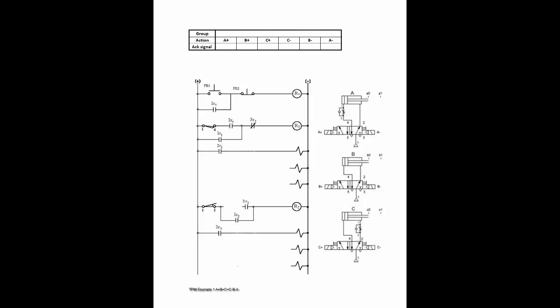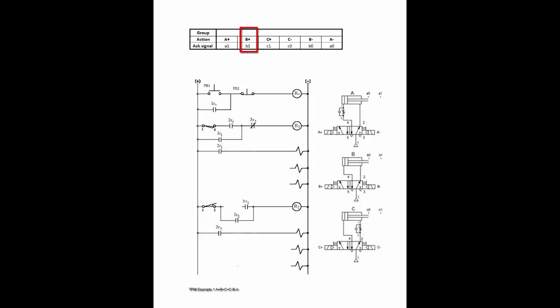With the initial positions of the three cylinders shown on the template, next enter the corresponding acknowledged signals. A plus will trigger A1 when cylinder A is fully extended. B plus triggers B1. C plus triggers C1. Similarly, C minus triggers C0 when cylinder C is fully retracted. B minus triggers B0. A minus triggers A0.